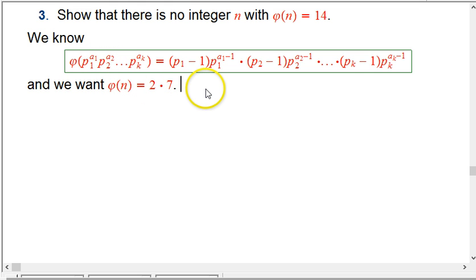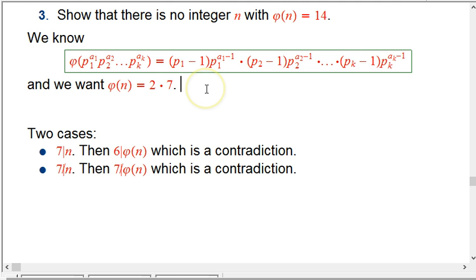So that suggests a two-case kind of situation. And it's actually going to be, once we see that, it's actually going to be pretty easy. So one case is, maybe 7 divides n. In other words, 7 is one of the primes in the list of primes, in the prime factorization.